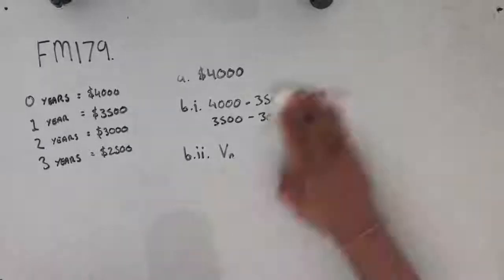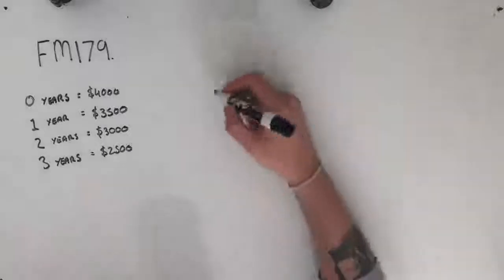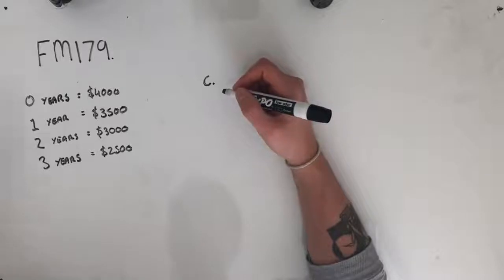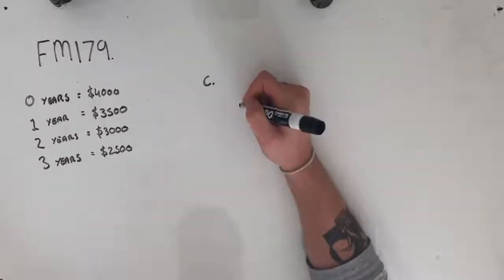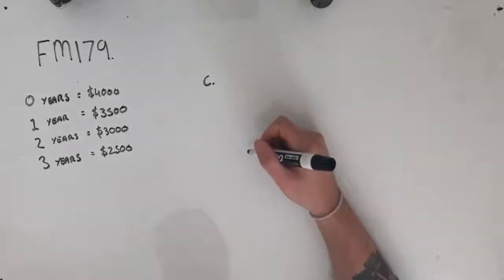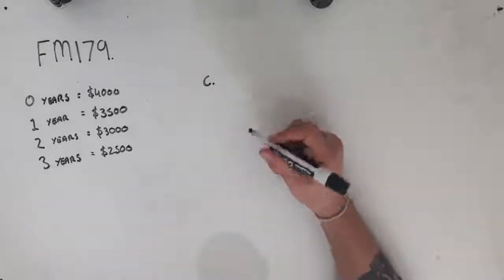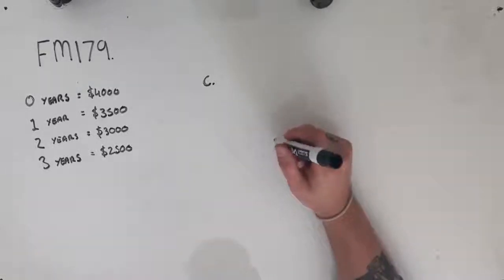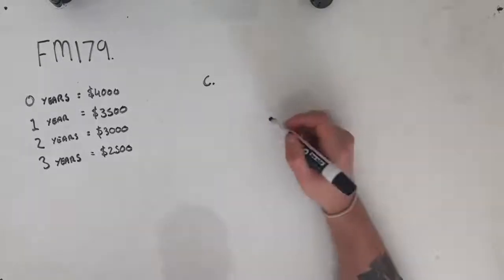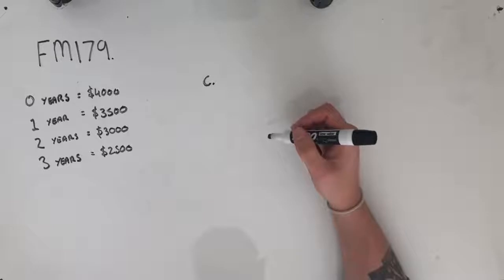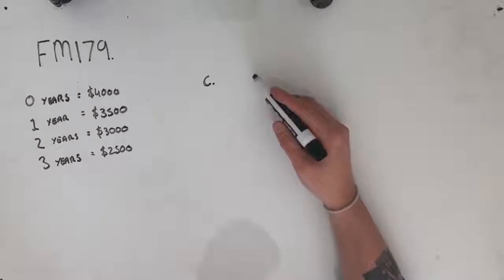Now part C. Part C has got a little bit more going on in it. It says that the unit cost method of depreciation can also be used to depreciate the value of the chainsaw. In a three year period, the total depreciation calculated at $1.20 per hour used will equal the depreciation calculated using the flat rate method of depreciation as described above. So part C wants us to determine the number of hours the chainsaw was used over the three year period.